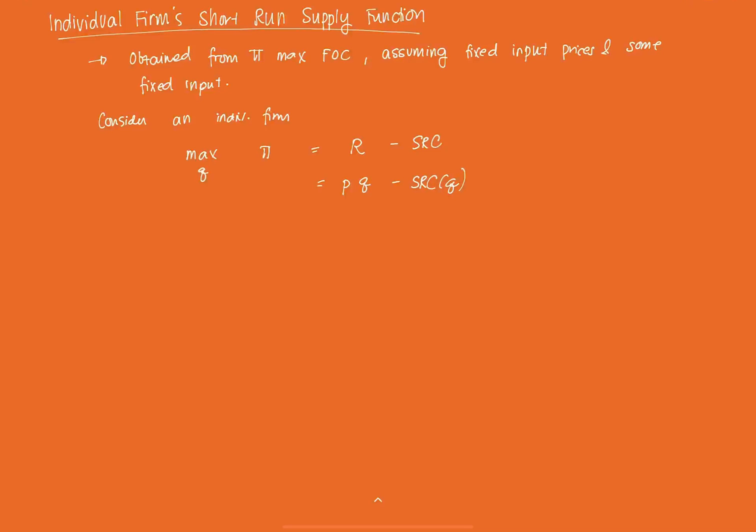Now, we can get a first-order condition. Our first-order condition is, we want to derive the profit function with respect to Q and we equate that to zero to get an extreme. So, how do we do that? Again, derive P times Q with respect to Q. We found that out in the last video. That's just equal to P.